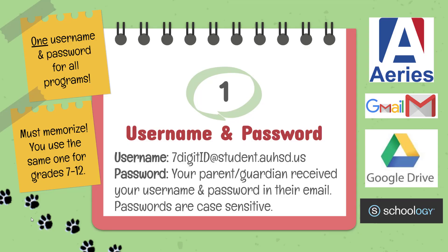Parents should have received an email containing your student's district username and password. The username will consist of a seven-digit ID number at student.auhd.us. The password is a string of case-sensitive letters and numbers. Students, you should memorize your ID number and password. They will be yours for as long as you are in the district, and you will use the same username and password for all district technology and online applications.